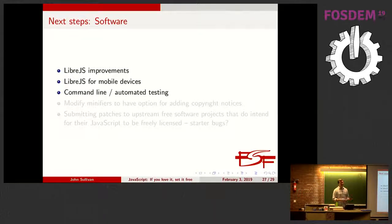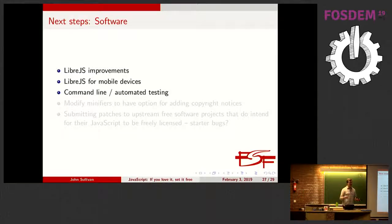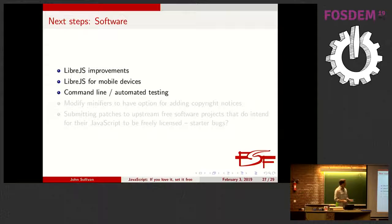The next step after that is to have a command-line or automated testing version of LibreJS. Even for us at the FSF, it's a problem — we work hard to maintain clear licensing information for our JavaScript, but we also use upstream platforms like Drupal, CiviCRM, and MediaWiki. Anytime there's a change or upgrade, sometimes the web label system breaks. We don't necessarily find out unless we manually check or somebody reports it. People realistically need an automated way to test it without browsing every individual page on their site.